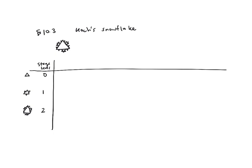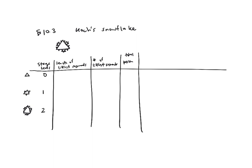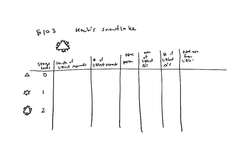The other information you might want to gather are things like: the length of the littlest segments at that stage, the number of littlest segments, and the total perimeter — that's one of the things you need to find out. Then you might also want the area of the littlest triangles at that stage, the number of littlest triangles, the total area from the littlest triangles, and then just the total area, which will be from all the stages added up.